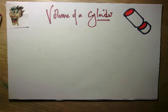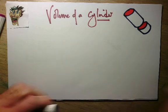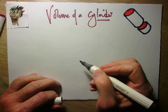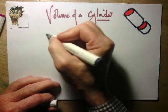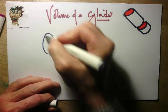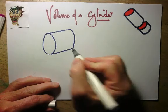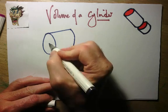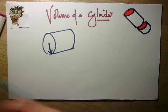So to work out the volume of a cylinder, what I need to do is work out the cross-sectional area, which is a circle, and multiply it by its length. So here we have a cylinder and I need to work out the area of that circle.